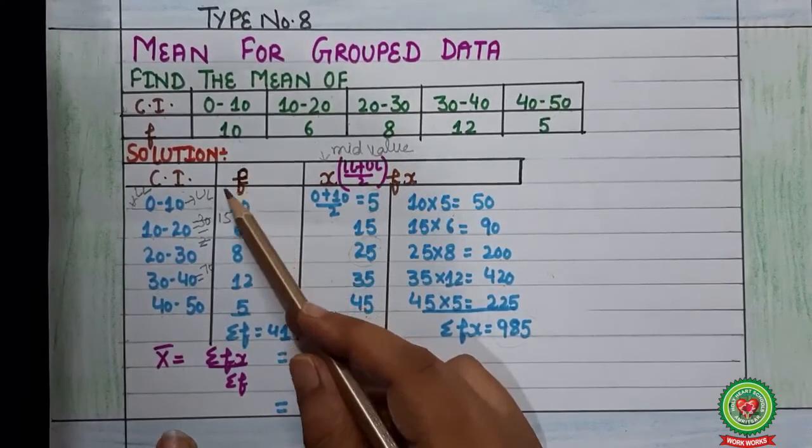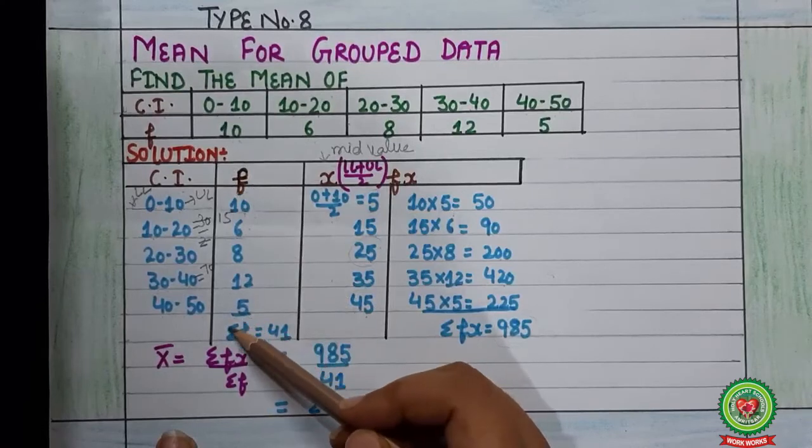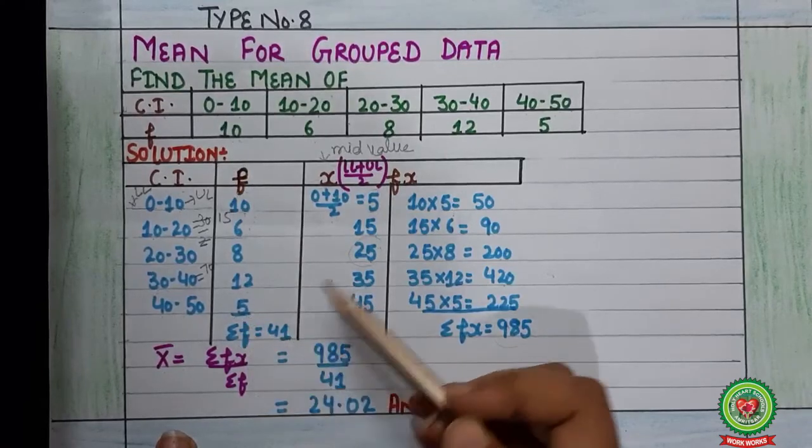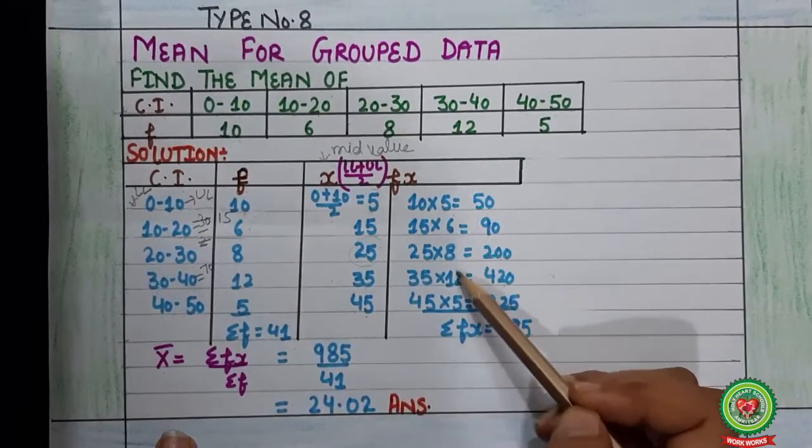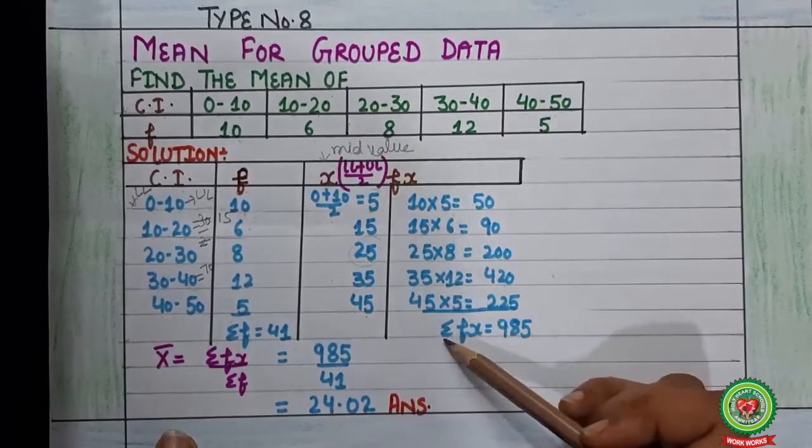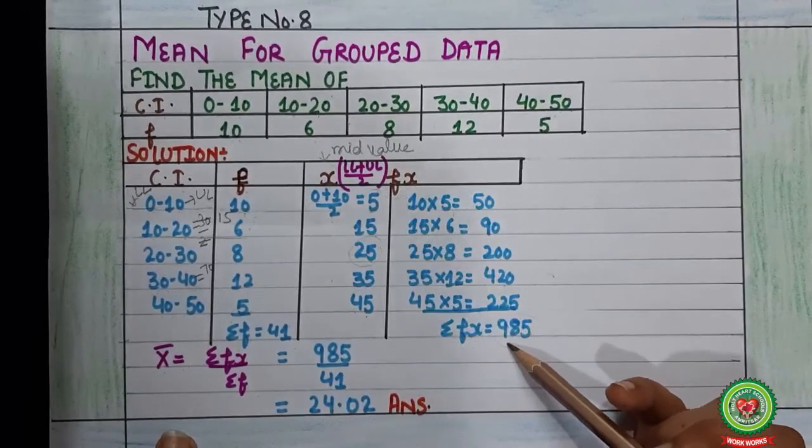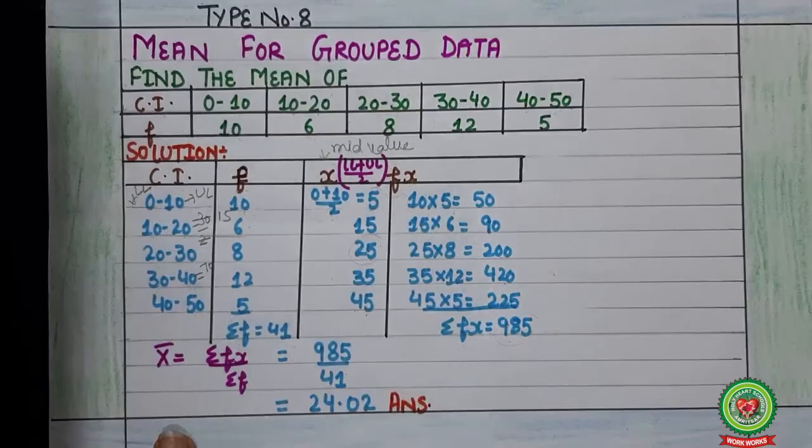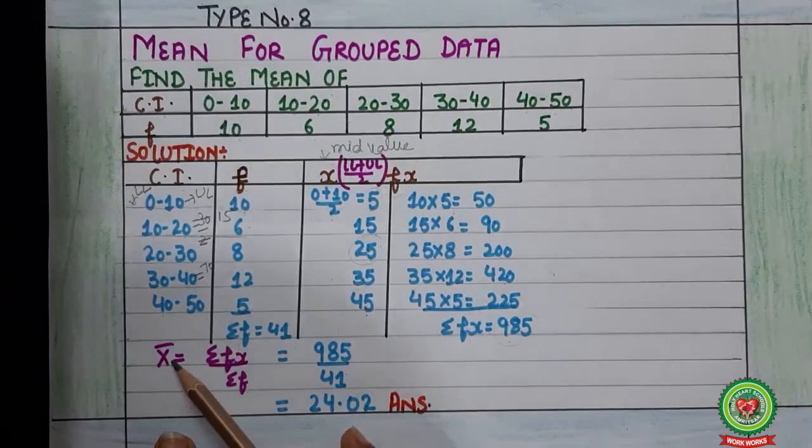Now children, add these both columns. After adding this column of f we will get summation f is equals to 41, and after adding this column of fx, summation fx is equals to 985. Now apply the formula of mean. Formula is mean equals summation fx upon summation f.